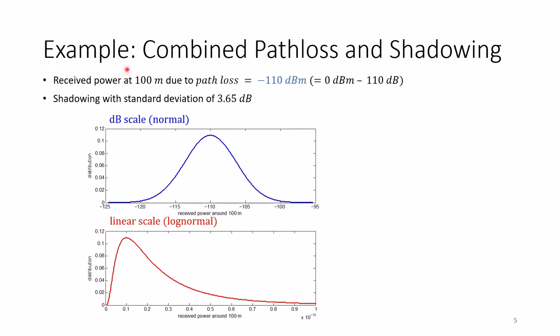Now, let's look at this example in terms of combined path loss and shadowing. The received power in this example at 100 meters is, due to path loss, is minus 110 dB. Okay, that is minus 110 dB. We started with 0 dBm, that's 1 milliwatt. And then we have path loss is minus 110 dB. It's given that the shadowing standard deviation is 3.65. So it means that if you want to get the loss at that distance, of course, you'll get a random number. The random number follows this pdf. So this is normal distribution in the dB scale.